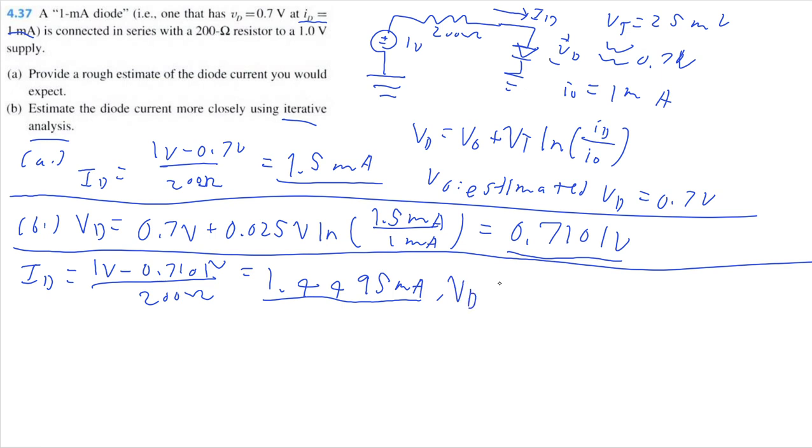And our new estimated voltage across the diode is equal to 0.7 volts plus 0.025 volts times the natural log of our new estimated diode current divided by our initial current. So, I'm getting that VD is equal to 0.7093 volts.